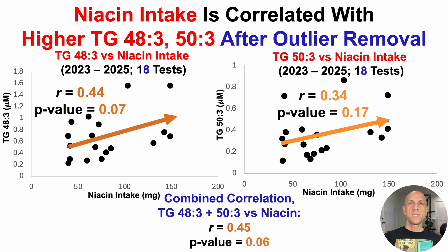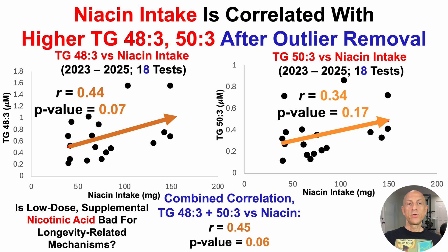Above about 40 milligrams per day of niacin, any time I go higher, it's been almost exclusively with nicotinic acid supplementation. These data suggest that even up to 100 milligrams per day may be bad for plasma levels of these triglycerides, which are linked with longevity in mice and associated with all-cause mortality risk in people. This argues against, in my case, even very low doses of nicotinic acid — although it raises NAD, it may be bad for other biomarkers, specifically these longevity-related triglycerides.